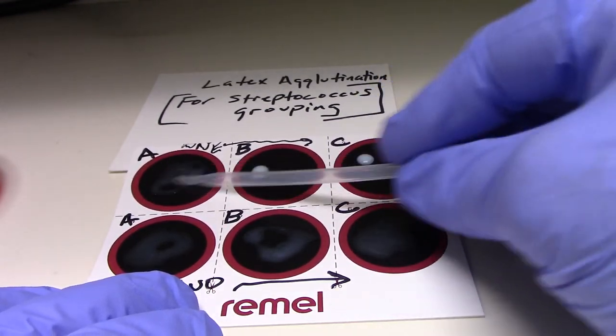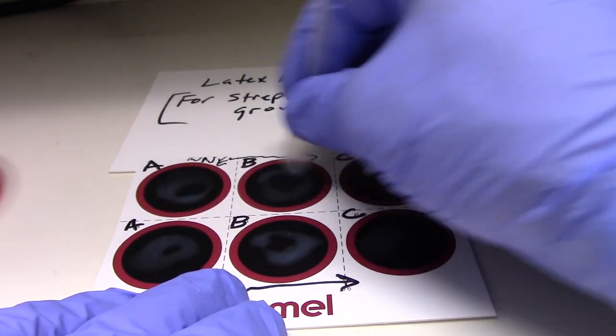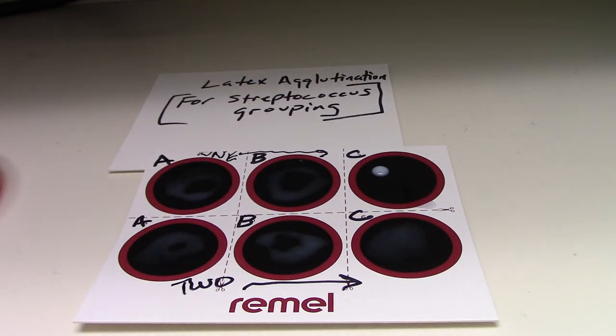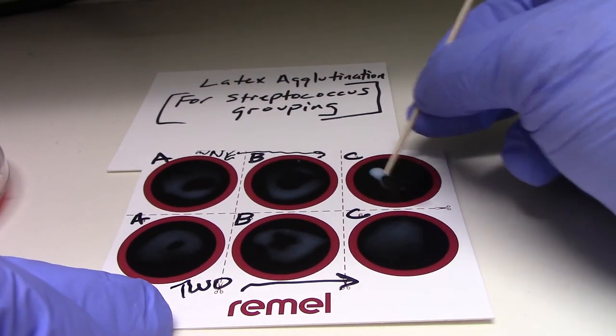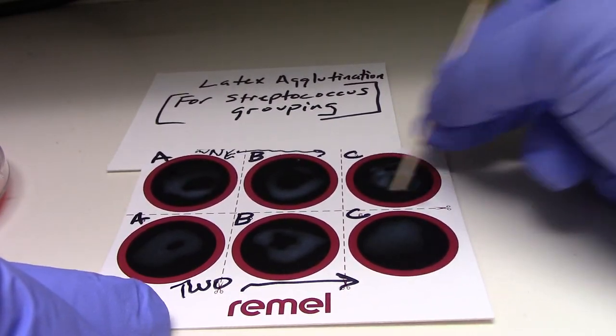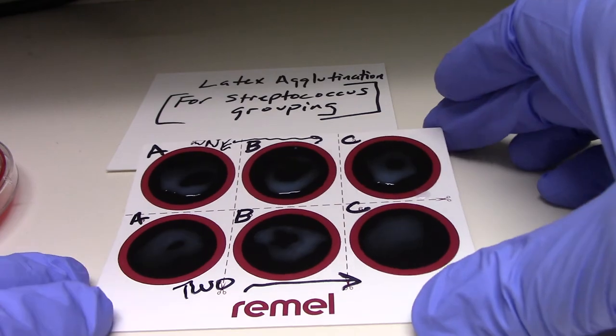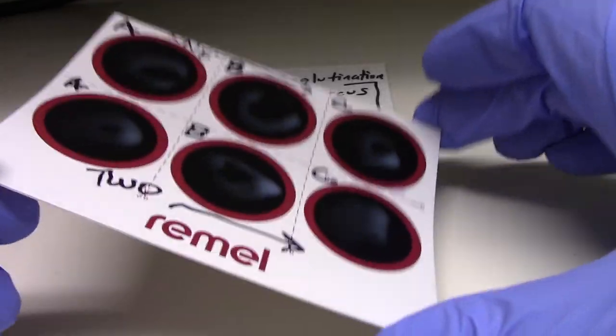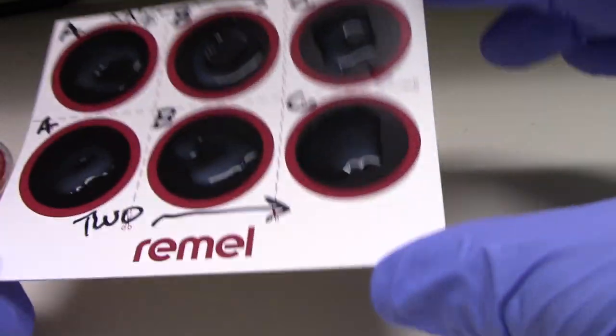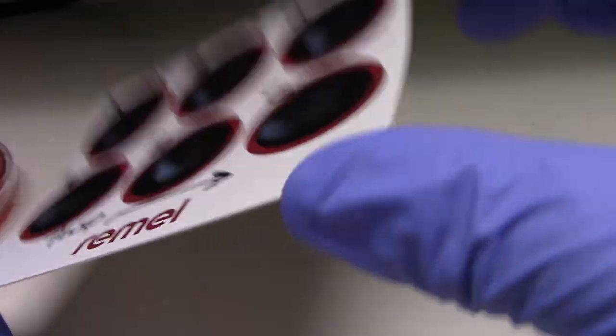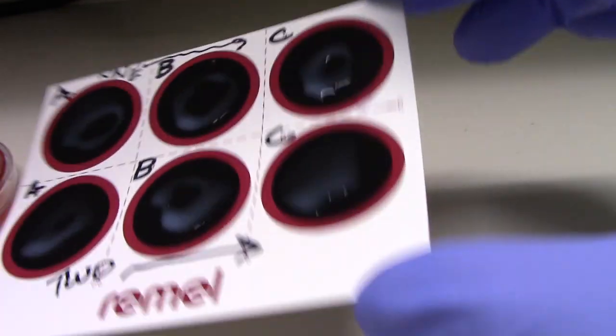A, reaction with A. Reaction with B. Reaction with C. And now we're going to look for agglutination to detect whether or not we have a type A streptococcus, a type B streptococcus, or a type C. I will mix this for a moment and then we will make our decision.